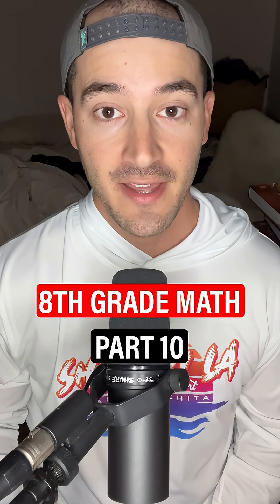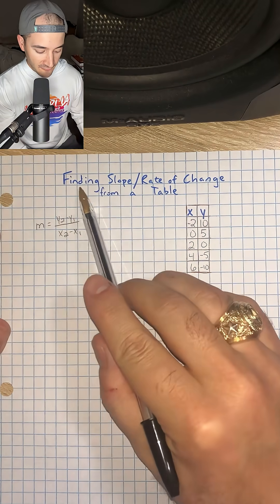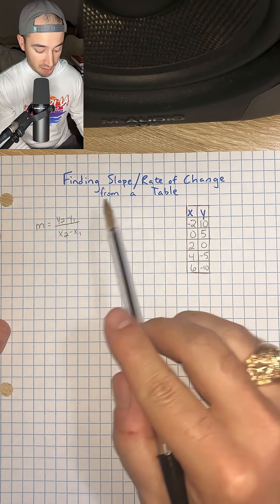This is everything you need to know for 8th grade math, part 10. So we're talking about finding slope, which is the same thing as rate of change, on a table.